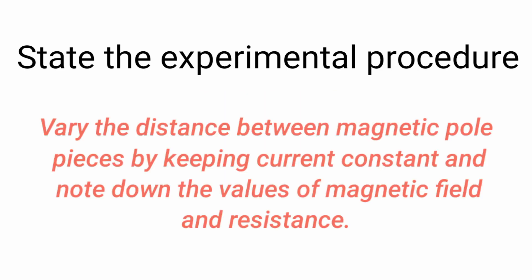In the next part, you will have to vary the distance between the magnetic pole pieces by keeping the current constant and note down the values of magnetic field and also the value of resistance. So this will complete the procedure.